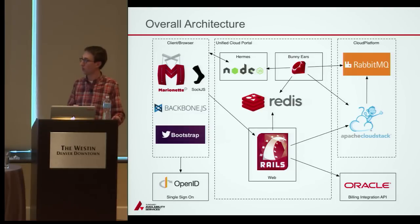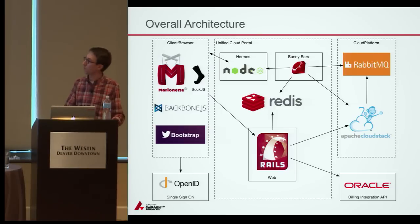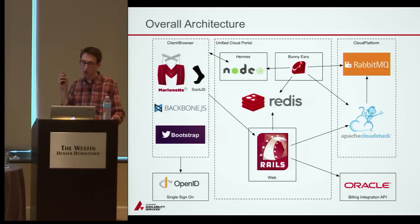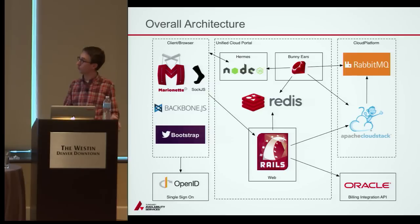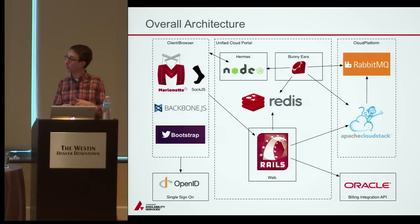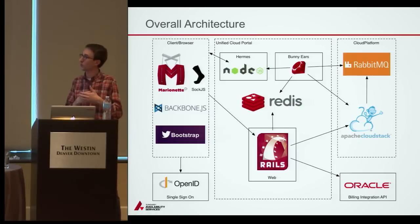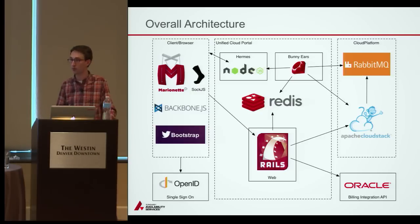The second connection is a WebSocket connection back to the Node.js Hermes app, which funnels real-time events up to the user. We subscribe to the RabbitMQ process that CloudStack publishes events to using a worker process we call BunnyEars, written in Ruby. BunnyEars parses each message, determines if it's relevant, potentially looks up more data from CloudStack or Redis, posts it to Hermes via HTTP, and Hermes decides which users the data is relevant for and sends it up to the browser.